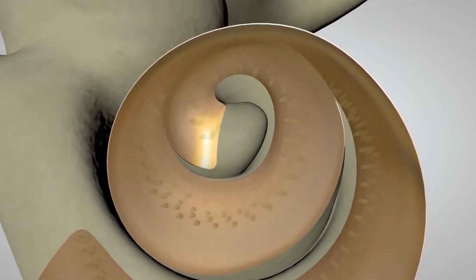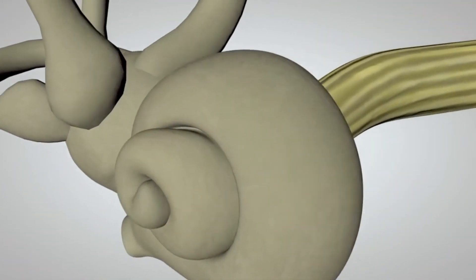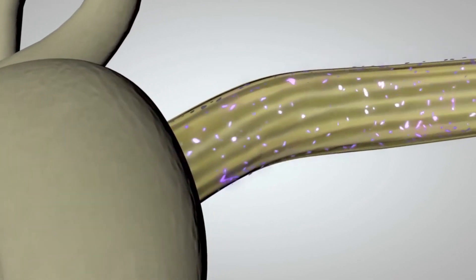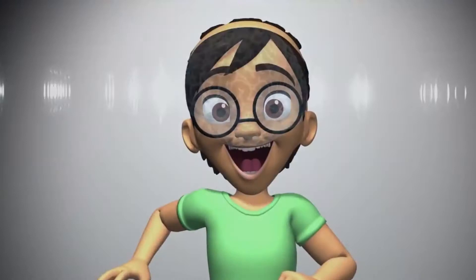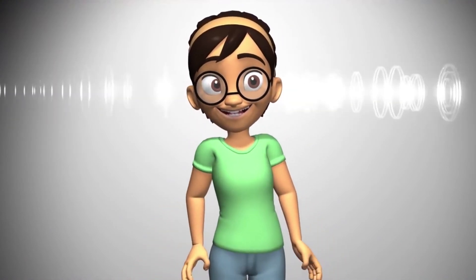The auditory nerve carries the electrical signal to the brain, which interprets the messages as sounds that we recognize and understand.